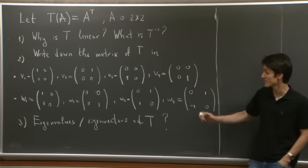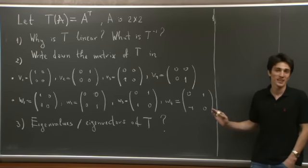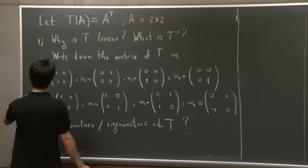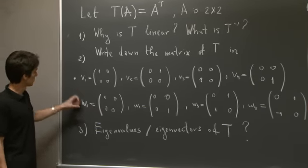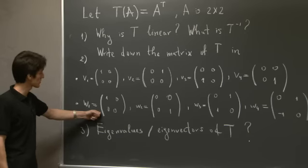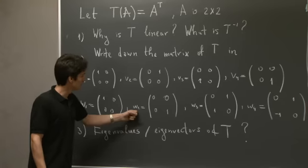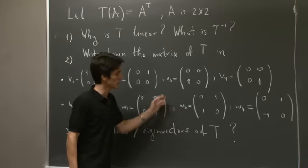We play the same game. We look at how T acts on each of the basis vectors. So T of w1, well w1 is a symmetric matrix, so T of w1 is w1. Similarly, with w2 and w3, they're all symmetric.